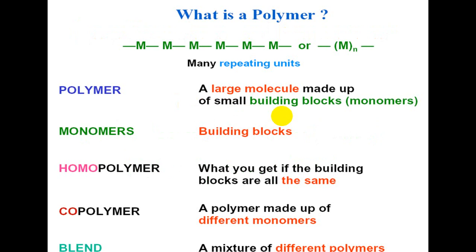These units connect with each other and make a large molecule — that is called a polymer. Many repeating units combine in different patterns and in different ways. A polymer is a large molecule made up of small building blocks called monomers. These monomers combine with each other to make the large molecule that is polymer.